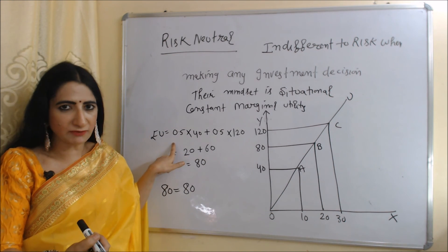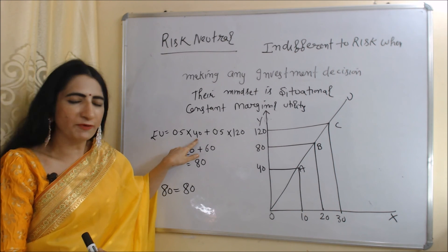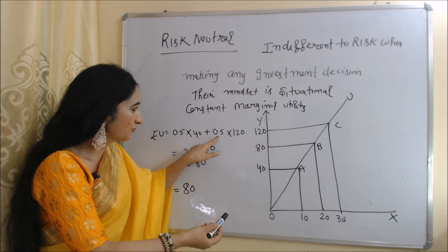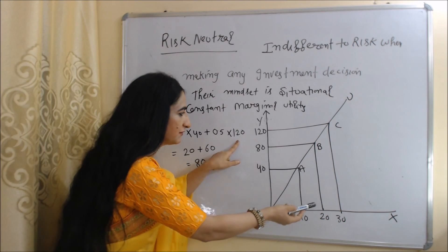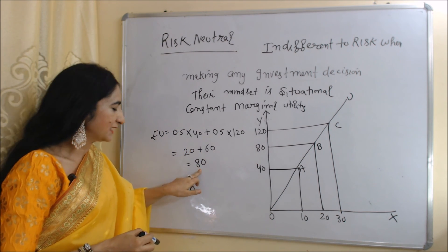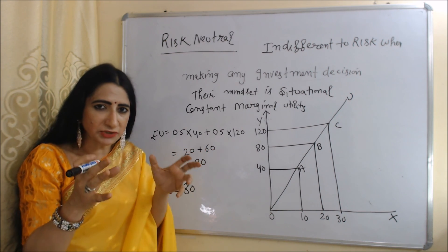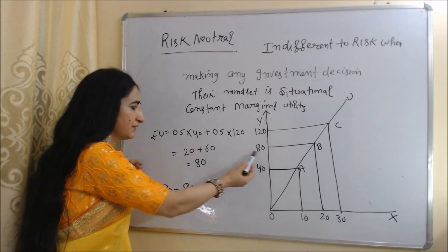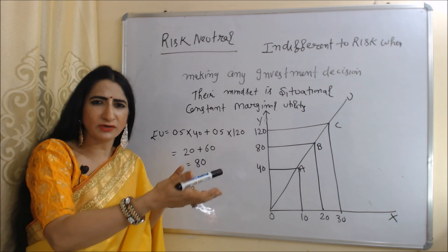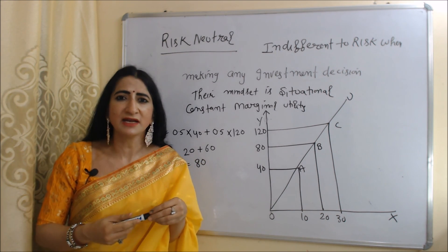We calculate expected utility for the risk neutral person, assuming probability of gain and loss is 0.5 each: EU = 0.5 × 40 + 0.5 × 120 = 80. This 80 is equal to their current utility of 80. So marginal utility remains constant, and current utility equals expected utility. This is because risk neutral people do not focus too much on either gain or loss. That covers all the topics on decision making under uncertainty and attitude towards risk.